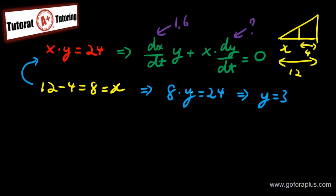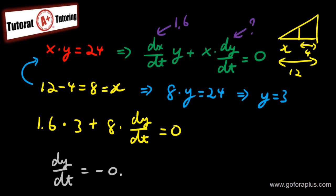Now that I have all the values, I can plug it back into my equation that I derived. So I have dx over dt as 1.6 multiplied with y, which is 3, plus x as 8. And then I need to find my dy over dt, which is equal to 0. If you solve this, this is going to give you dy over dt equals to minus 0.6 meter per second.